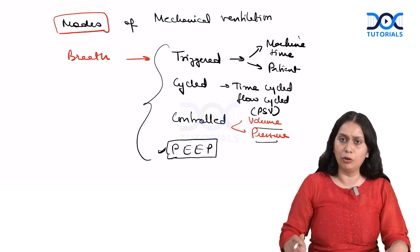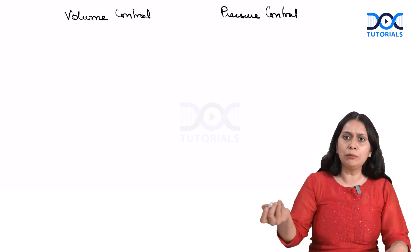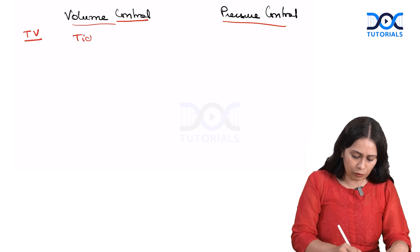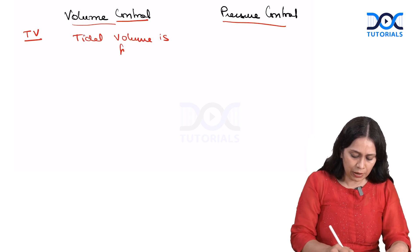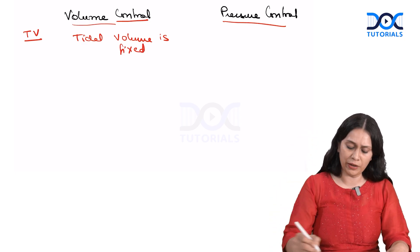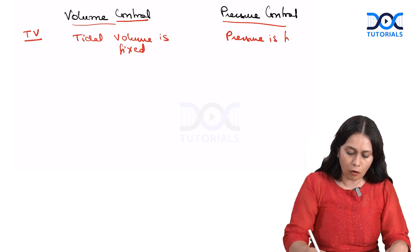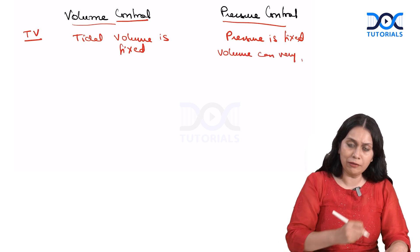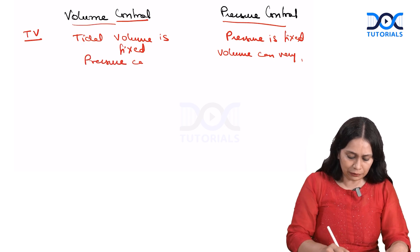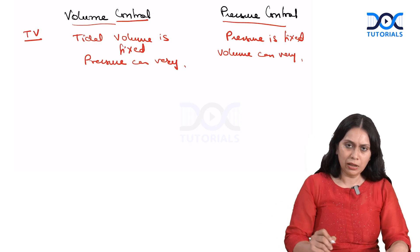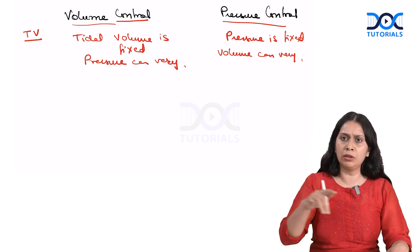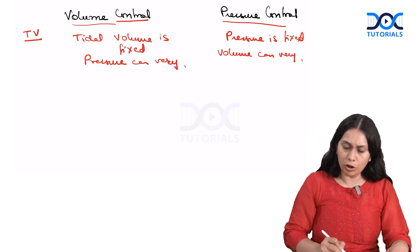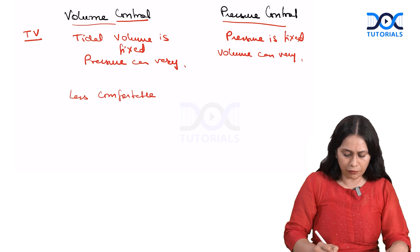Let us talk about volume control and pressure control. When we set a mode, most modes can be either volume control or pressure control. In volume control, tidal volume is fixed. In pressure control, the upper limit of plateau pressure is fixed, and the volume delivered depends on the compliance of the lung — so volume can vary. In volume control, the inspiratory flow is constant throughout inspiration until the total tidal volume is delivered, which is less comfortable for the patient. Pressure control is more comfortable.